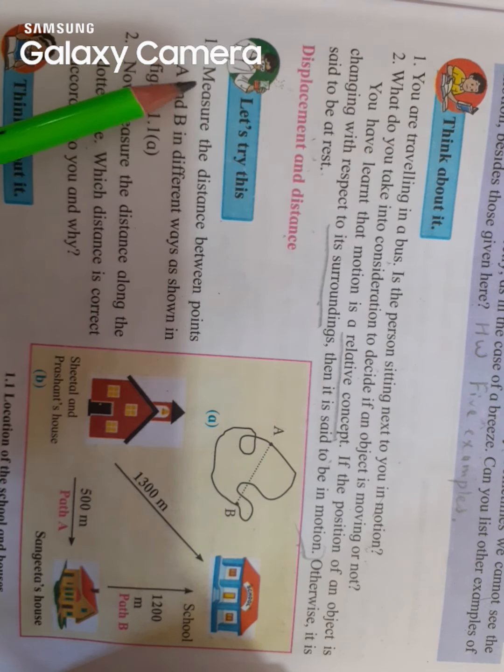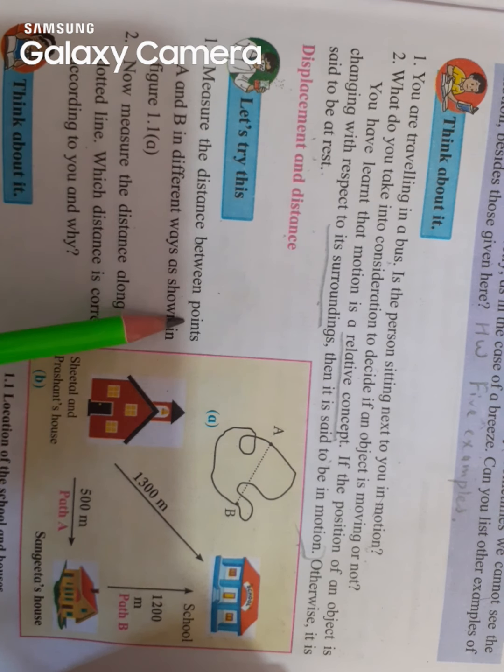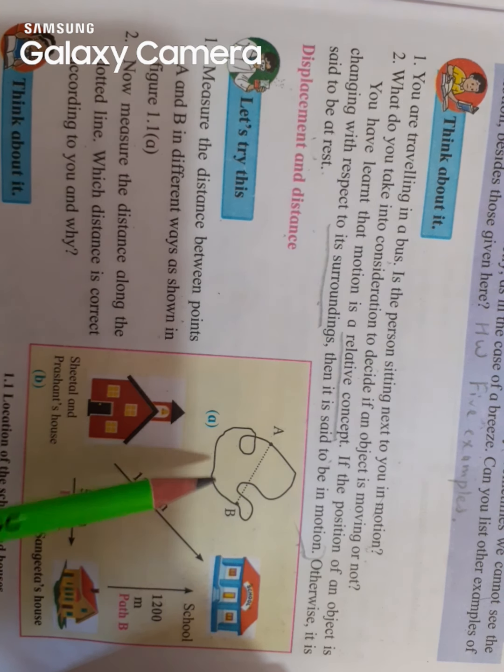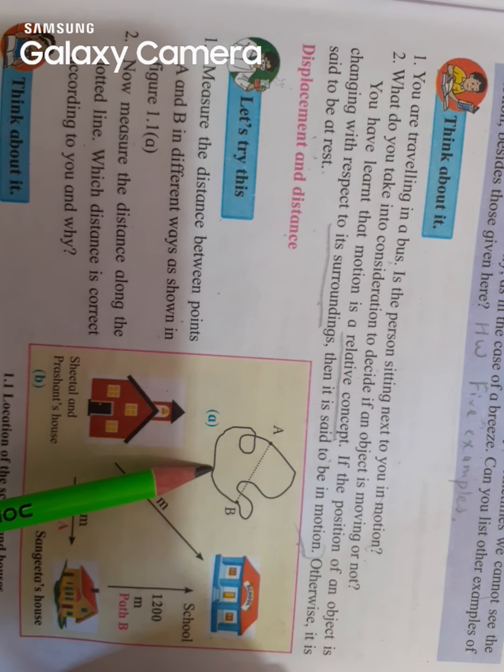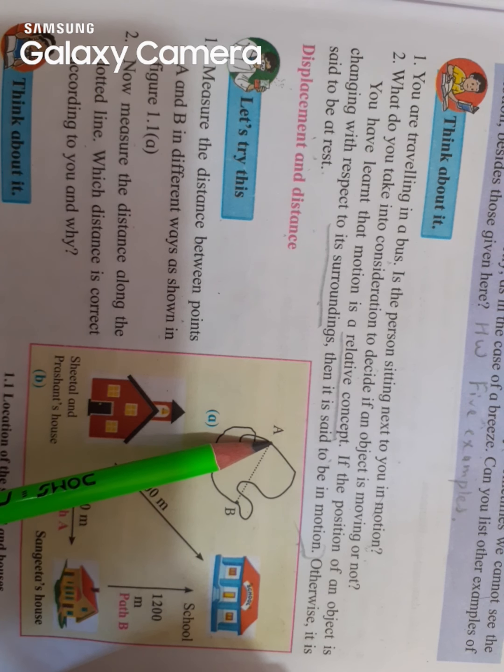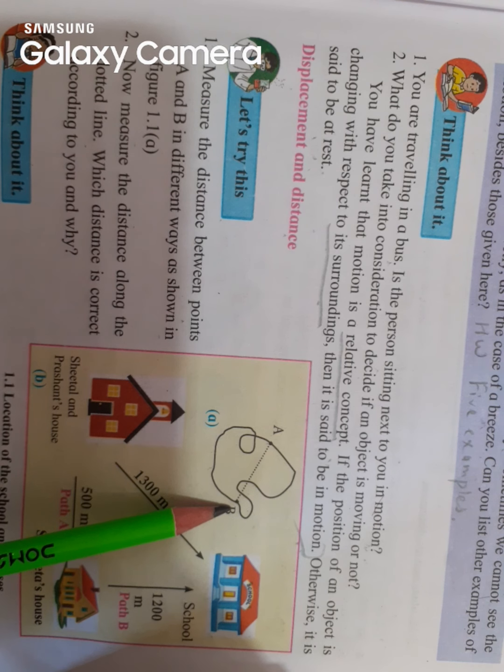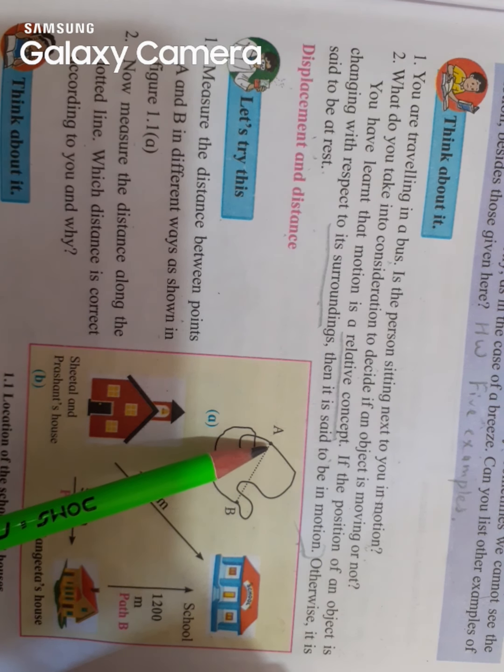The first activity is: measure the distance between point A and B in a different way as shown in figure 1.1a. So you will come down to this diagram 1.1a. I can see there is a point A and there is a point B. Now they are telling us to measure the distance between point A and B in a different way.